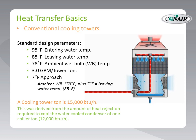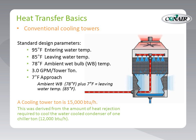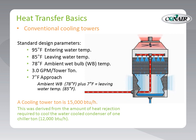For cooling towers, we speak in terms of an approach temperature of 7°F. That means we can provide a leaving water temperature 7 degrees above the ambient wet bulb temperature. We should make a distinction between chiller tons and cooling tower tons. A chiller ton is 12,000 BTUs per hour, derived from the amount of energy required to melt one ton of ice over a 24-hour period. A cooling tower ton is 15,000 BTUs per hour, derived from the average energy required to cool the condenser of a one ton chiller.